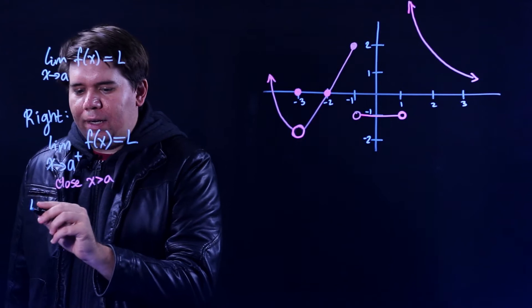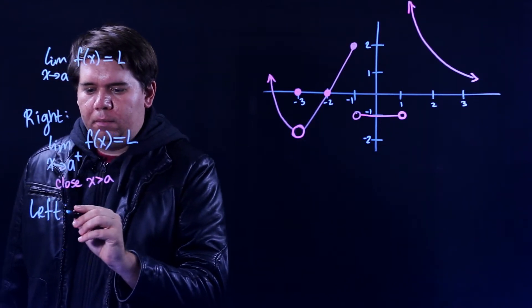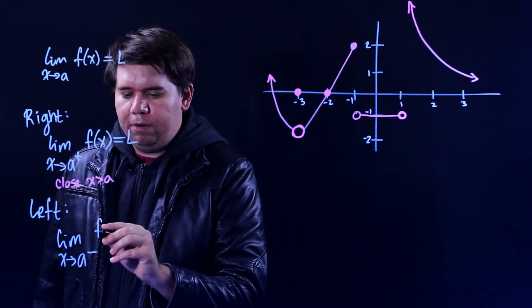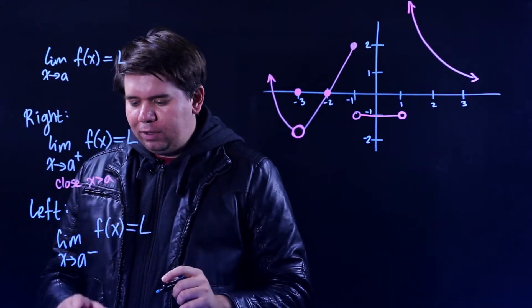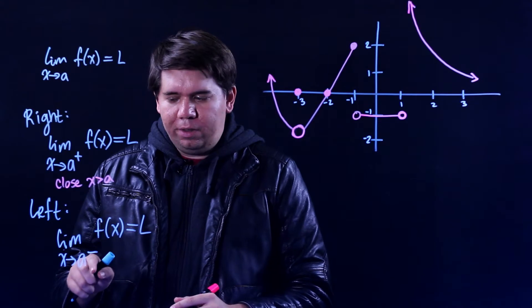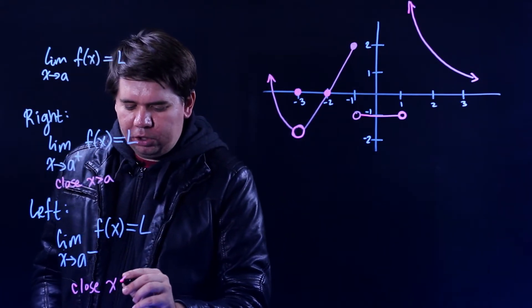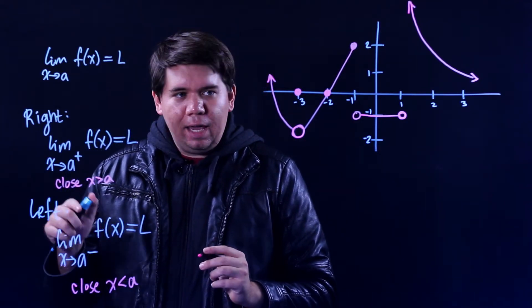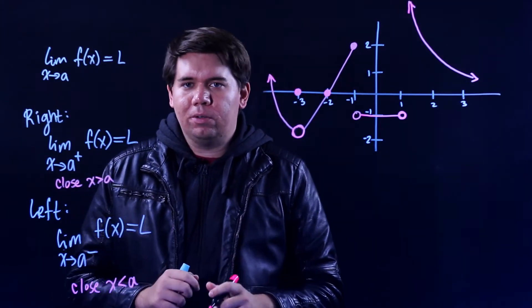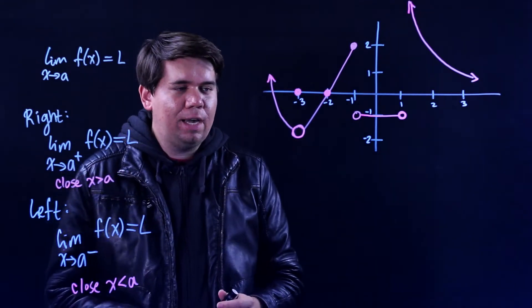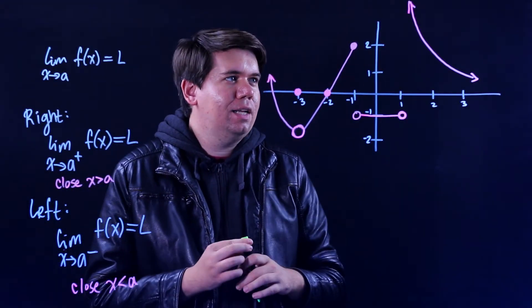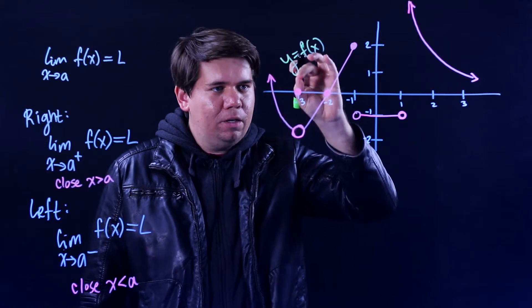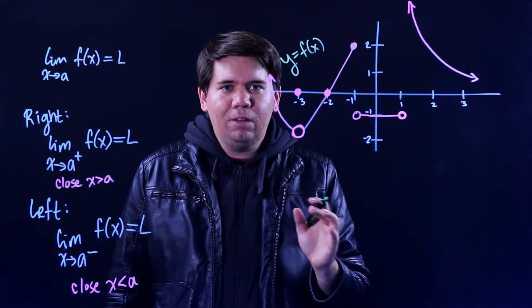Similarly, we can define a left-hand limit: the limit as x approaches a from the left, so minus for left, of a function. It's just saying when you look at x values that are a little bit smaller than a — really close x values that are just a little bit smaller than a — then as x gets closer to a from the left-hand side, your function is going to be equal to l. To make sure we understand this, let's look at this example graph. Let's say this is the graph of the function y equals f of x. It's a piecewise function, but we can still think about its limits.